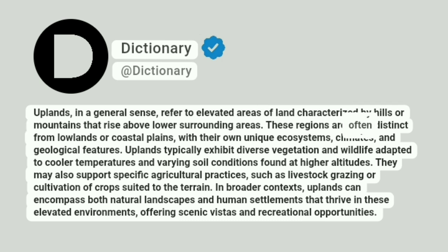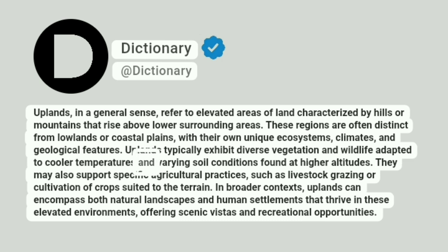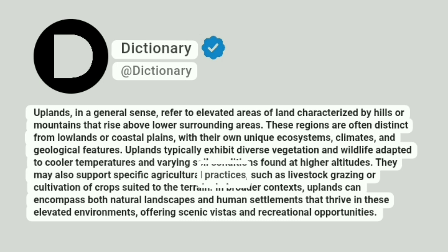These regions are often distinct from lowlands or coastal plains, with their own unique ecosystems, climates, and geological features. Uplands typically exhibit diverse vegetation and wildlife adapted to cooler temperatures and varying soil conditions found at higher altitudes. They may also support specific agricultural practices, such as livestock grazing or cultivation of crops suited to the terrain.